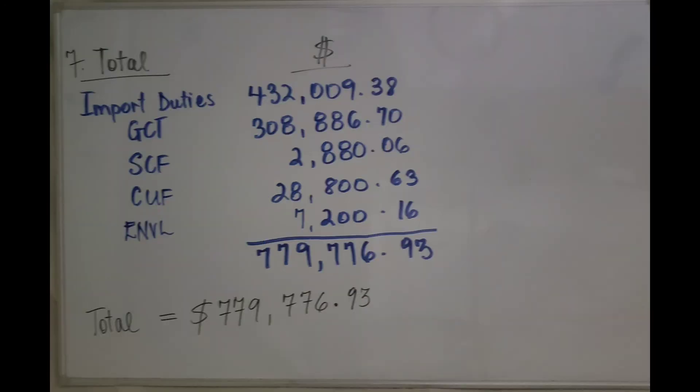We'll have to add the import duties, the GCT, the standard compliance fee, the customs user fee and the environmental levy and we will get $779,776.93, and that's the amount payable to the customs.